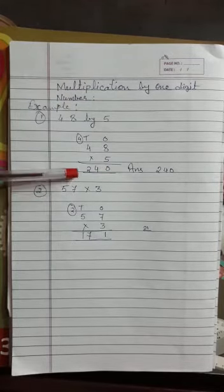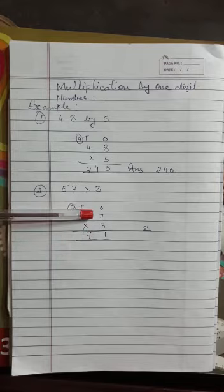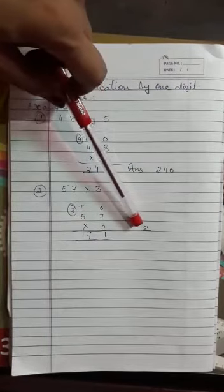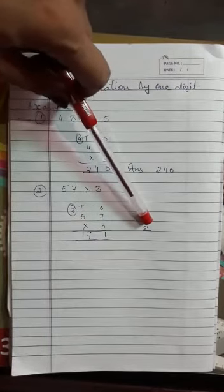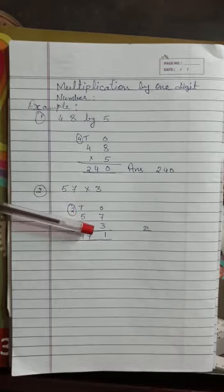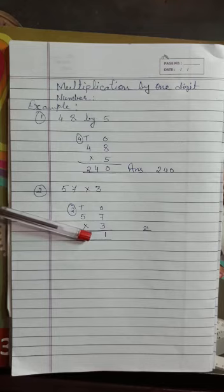Now 57 into 3. Children, first I arranged the numbers. Multiply 3 by the ones digit. 3 sevens are 21. From 21 first write 1 and carry 2. The tens digit gets the carry. Write the ones digit here and carry over the tens digit. Now multiply 3 by the tens digit. 3 fives are 15. Add carry 2 to 15 making 17. The answer is 171.